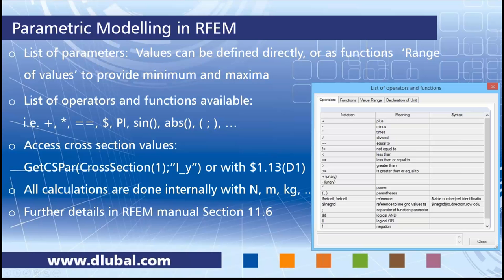You can access a list of operators and a list of functions — RFEM helps you see what's available. Most are straightforward: plus, minus, multiply. There are functions like sine or absolute value. A more advanced function is GetCSPar (get cross-section parameter), which lets you access any cross-section value by specifying the cross-section number and an ID value — for example, IY is the moment of inertia. You can also use dollar signs to access any cell in any table, similar to Excel.